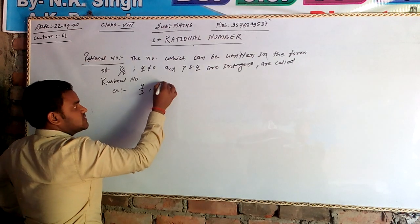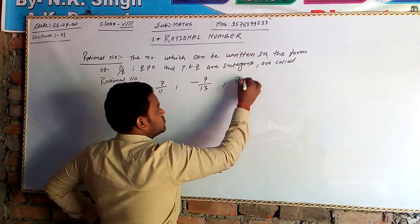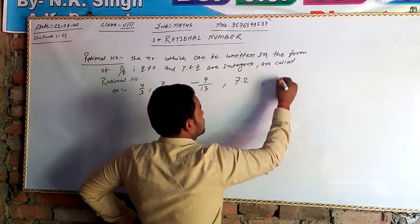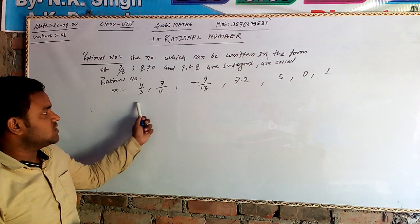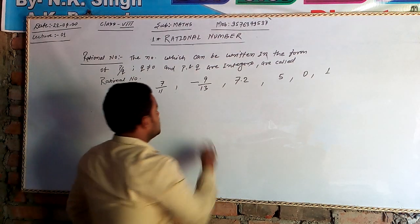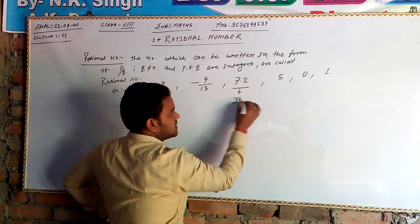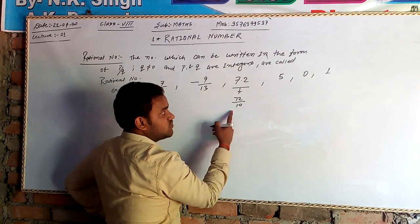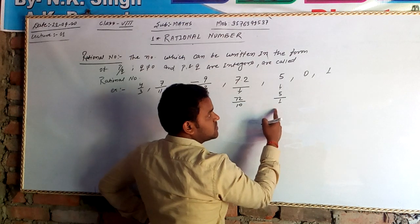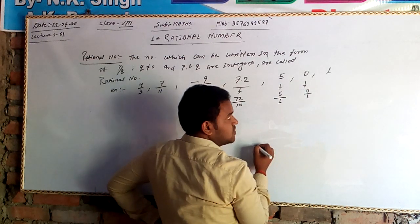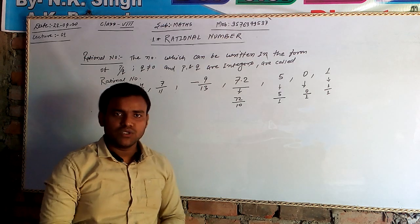For example: 4 by 3, 7 by 11, minus 9 by 13, 7.2, 5, 0, and 1 are all rational numbers. These all can be written in the form of P by Q, so these are all rational numbers.